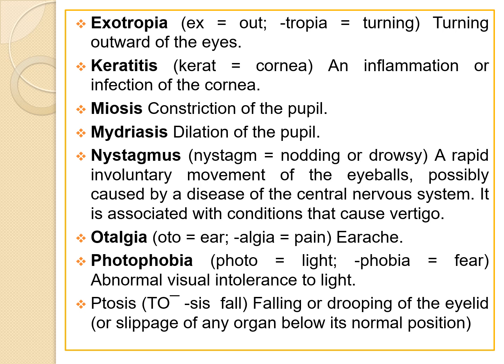The next term is photophobia. 'Photo' means light, and 'phobia' means fear, so photophobia is abnormal visual intolerance to light. The next term is ptosis — the falling or drooping of the eyelid, or slippage of any organ below its normal position.